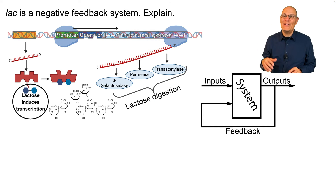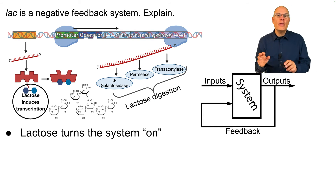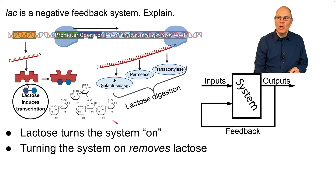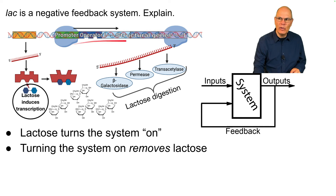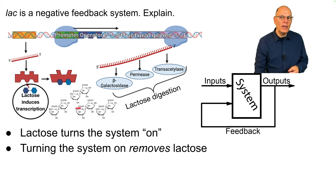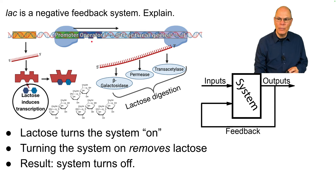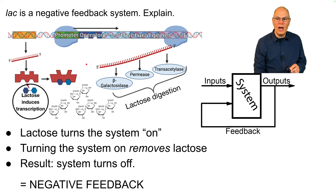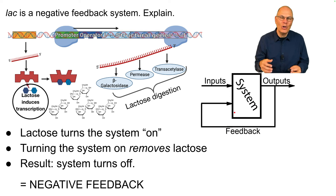The lac operon is a negative feedback system. Think about how it works: lactose turns the system on. Turning the system on removes lactose from the system, because allowing RNA polymerase to transcribe these genes allows for production of enzymes that enhance lactose digestion. That enhanced lactose digestion will make all the lactose go away. When the lactose goes away, there's no more lactose to bind with the repressor, which then binds with the operator, turning the system off. That's negative feedback.